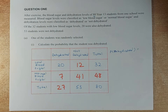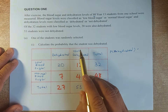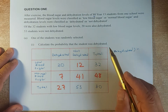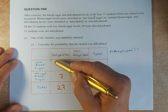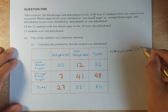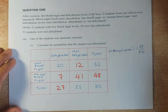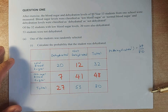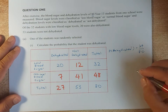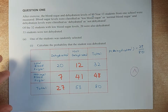Once we have filled the table, we answer the question and should get an easy achieve. The question asks you to calculate the probability that the student was dehydrated. Dehydrated is 27, so it's going to be 27 out of the total, which is 80. That will give you a simple achieve in this paper.